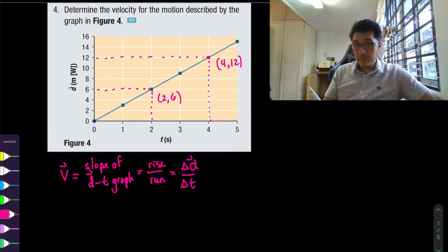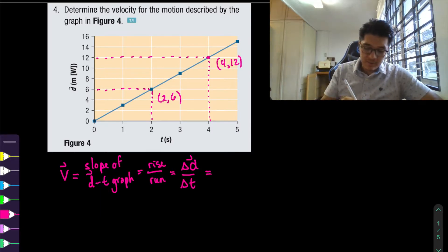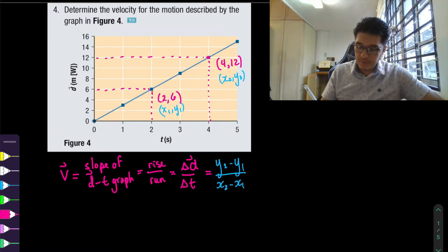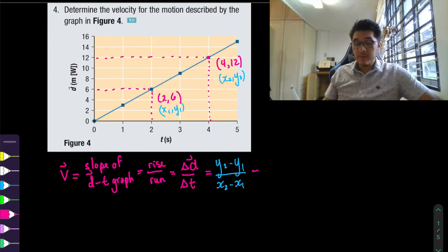So remember the slope formula rise over the run y2 minus y1 over x2 minus x1 so maybe a good strategy is to put those labels there so it could help us out. Again this is just as a visual cue you don't have to do this. Now we can actually do the calculation.